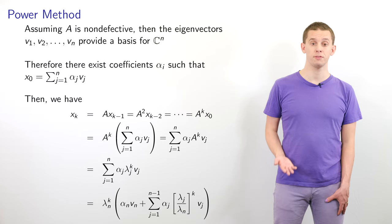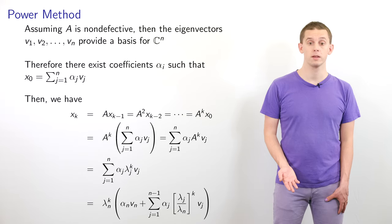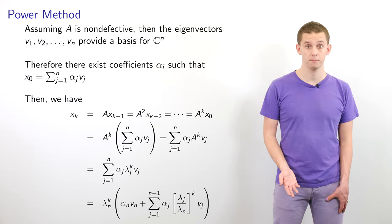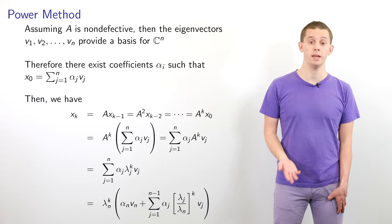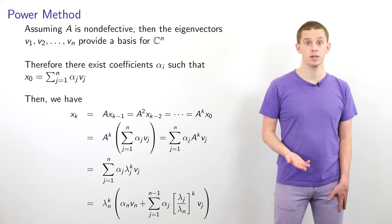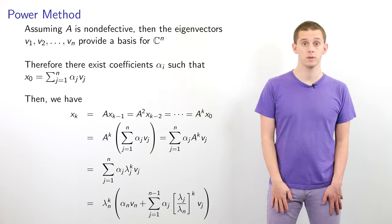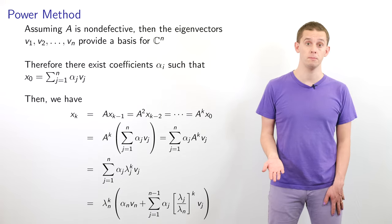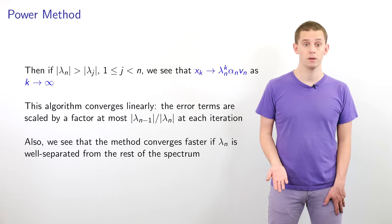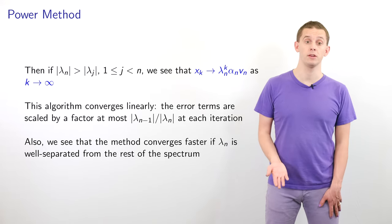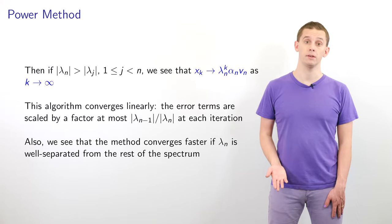We can now pull a factor of lambda_n^k out the front of this expression, giving lambda_n^k times alpha_n v_n plus the sum from j=1 to n-1 of alpha_j times the ratio (lambda_j / lambda_n)^k times v_j. All of those ratios in the sum are less than 1 in modulus because lambda_n has the largest modulus. Therefore, x_k tends to lambda_n^k alpha_n v_n as k tends to infinity.